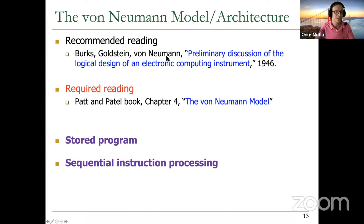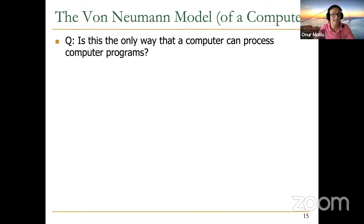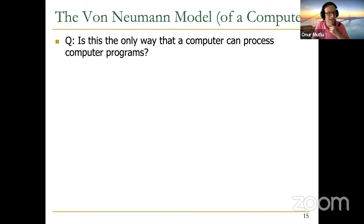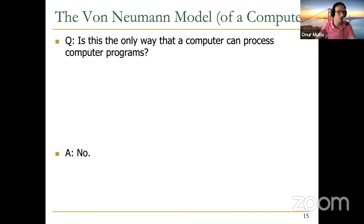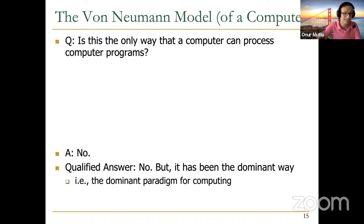Keep these two principles in mind: stored program and sequential instruction processing. Now let me raise the question: is this the only way a computer can process programs? The answer is no — you can imagine many different ways. The von Neumann model has been the dominant paradigm for computing for more than 70 years. But maybe it's time to change, given the trouble we're having with data movement and memory accesses.